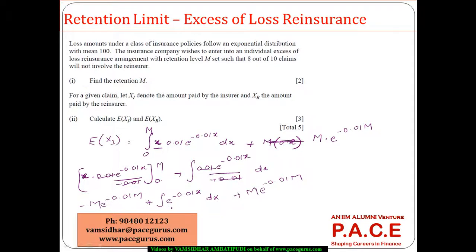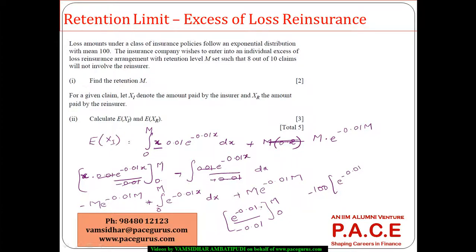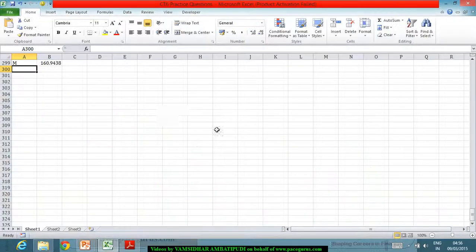Evaluating the remaining integral: e^(−0.01x) / (−0.01) from 0 to M gives −100 · (e^(−0.01M) − 1), which simplifies to 100 · (1 − e^(−0.01M)). This is the expected value of XI.